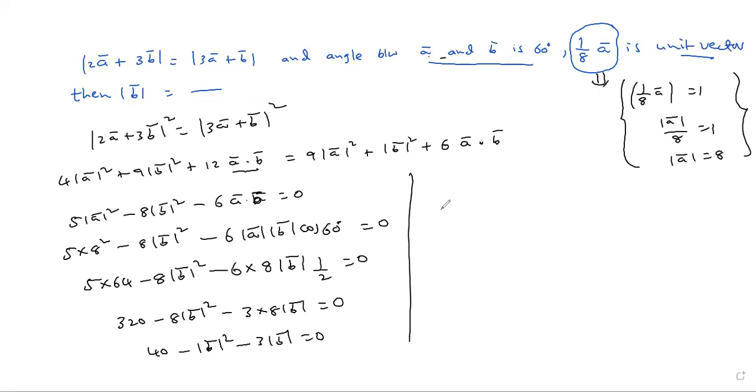Simple quadratic. The proper arrangement: mod B squared plus 3 mod B minus 40 equals 0. We got a quadratic in mod B.